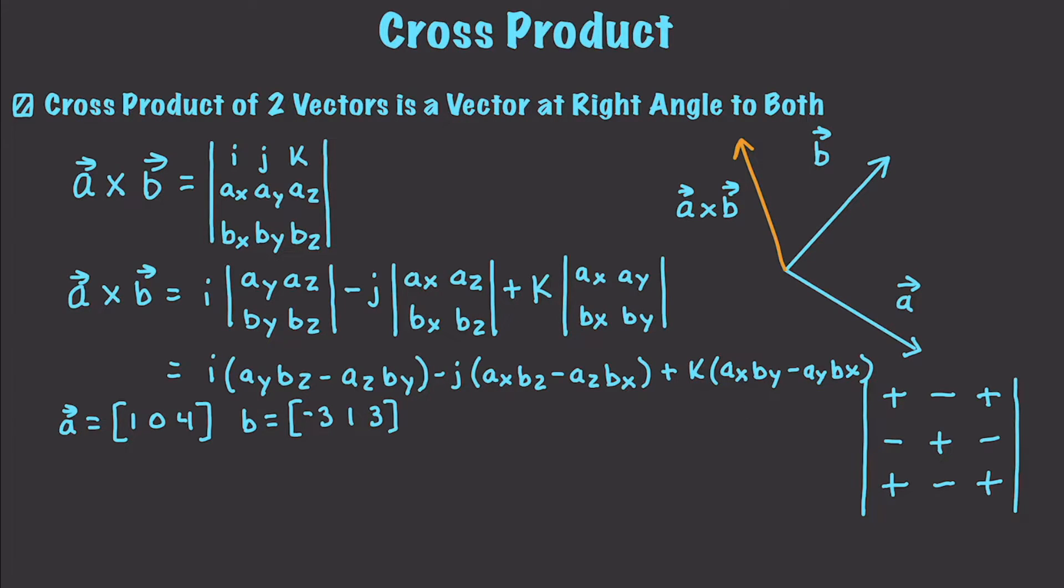So, we just plug it into our formula we have here, and we find that NX is going to be equal to aY*bZ minus aZ*bY, which is going to end up being equal to 0 times 3 minus 4 times 1, or negative 4. Let's go and find NY. That is going to end up being equal to aZ*bX minus aX*bZ, and the reason why is because of the negative sign on j, the reason those flipped, and this is going to be equal to 4 times negative 3 minus 1 times 3, which is equal to negative 15.